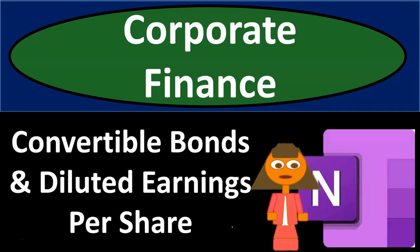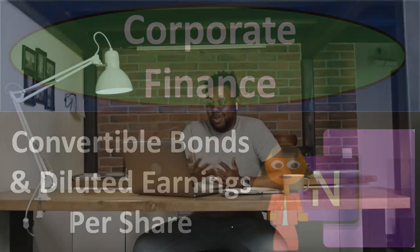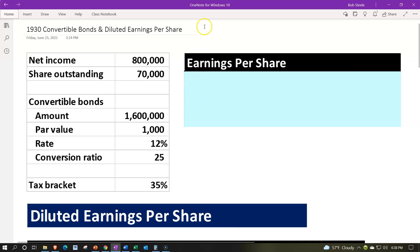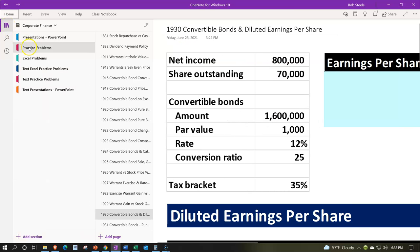This is a corporate finance practice problem using OneNote, focusing on convertible bonds and diluted earnings per share. Here we are in OneNote. If you'd like to follow along, go to the icon on the left-hand side, in the practice problems tab, down in the convertible bonds and diluted earnings per share tab.